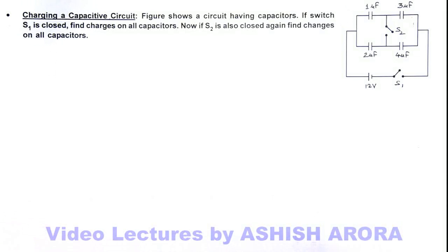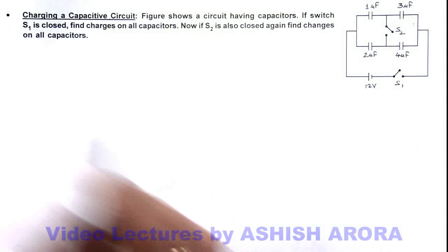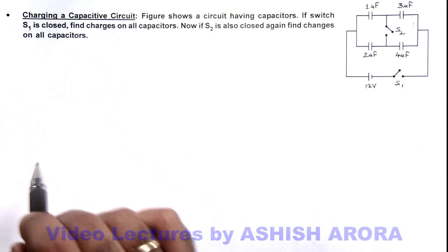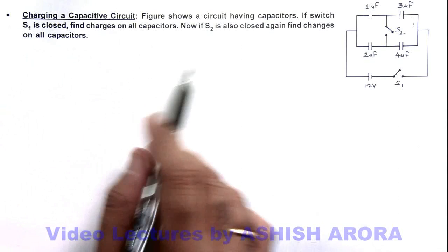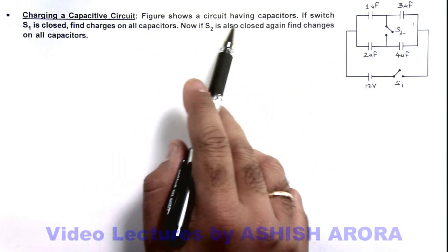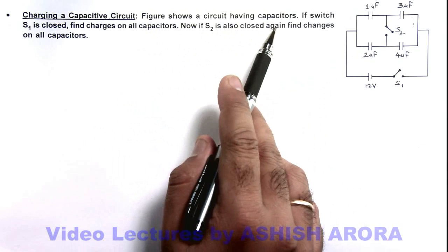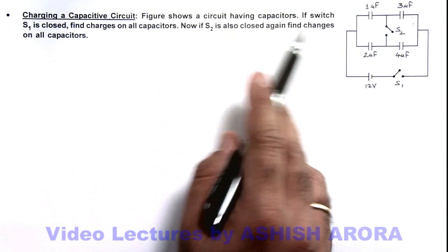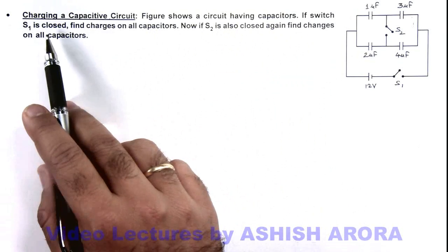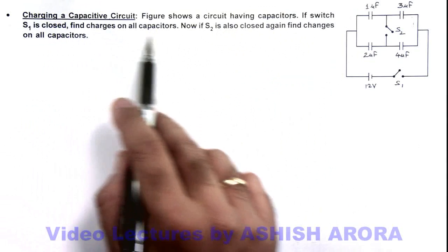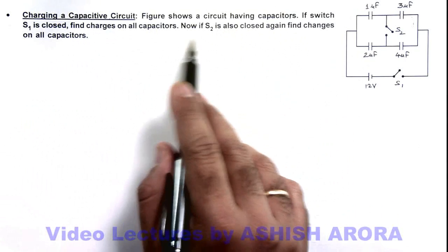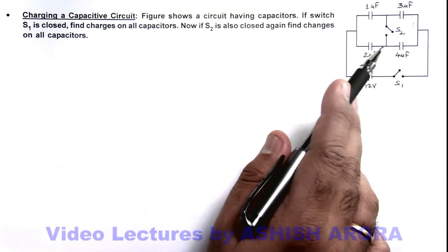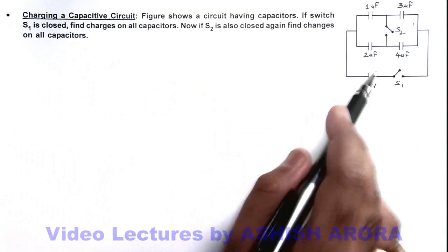In this illustration, let's study about charging of a capacitive circuit. The figure shows a circuit having some capacitors. If switch S1 is closed, we are required to find the charges on all these capacitors. And if S2 is also closed, find the charges on these capacitors again.